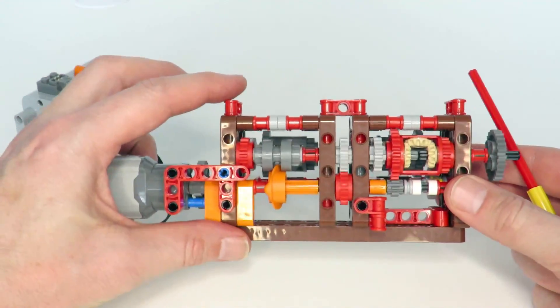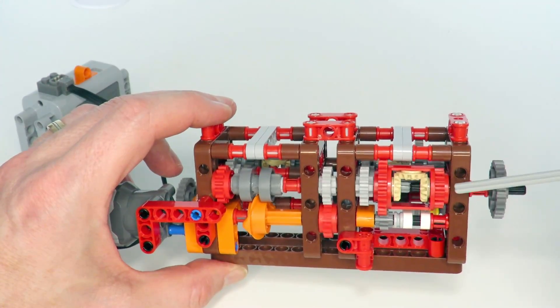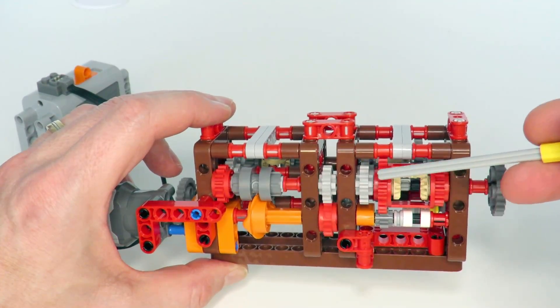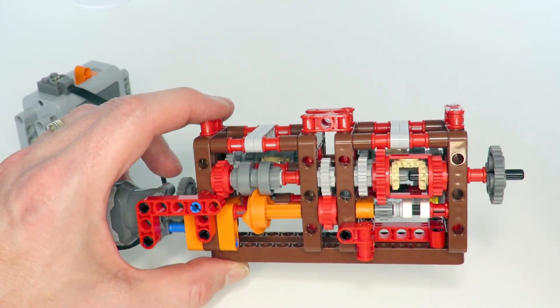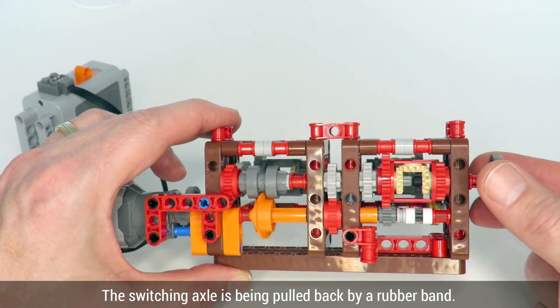So on the right side here, we have got the output. That output has got a differential that measures the loading difference between the input and output on that differential. So as we load up the output, we can see that differential reacting.